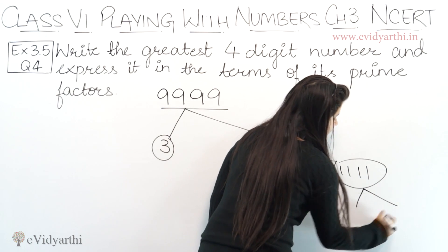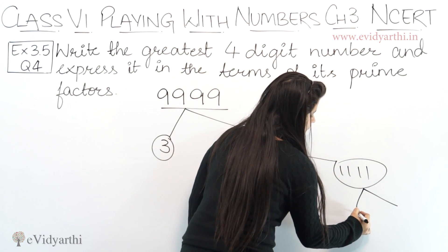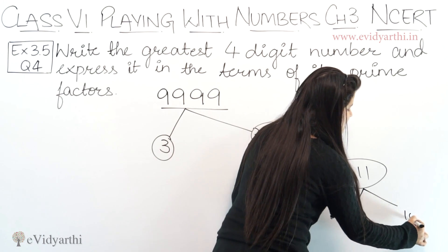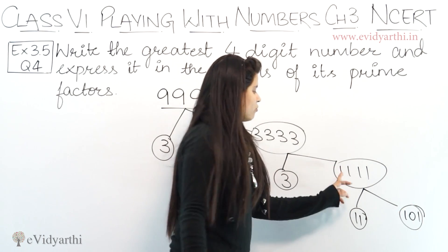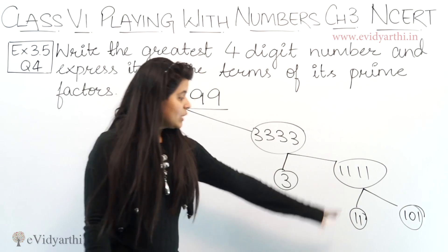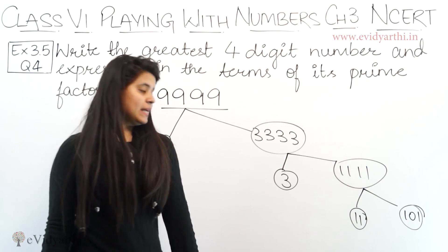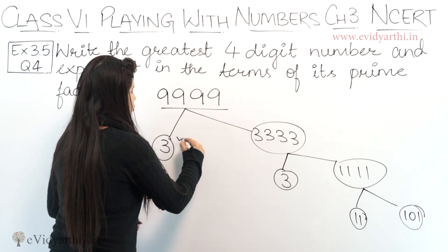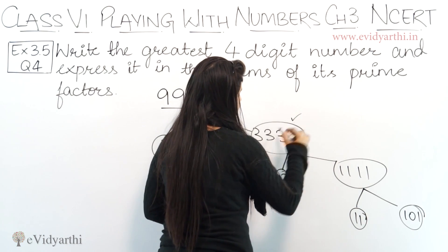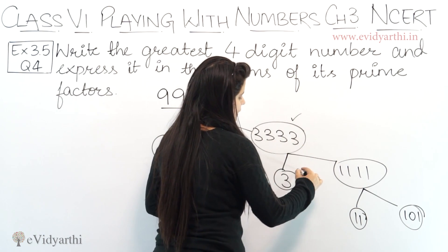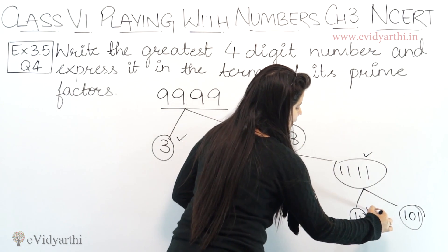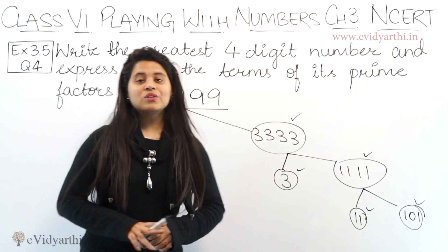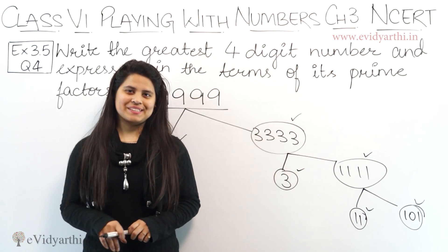To expand 11 further, I can write it as 11 multiplied by 101. So this will be 1, 1, 1, 1. We cannot divide these further, so we leave it till here. So the factors are 3, 3, 3, 3, 3, 3, then 1, 1, 1, 1, then 11 and 101. So this was question number 4. Now let's come to the next question.